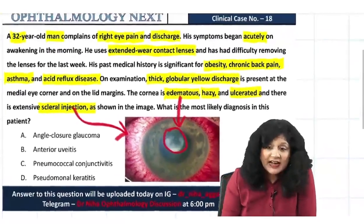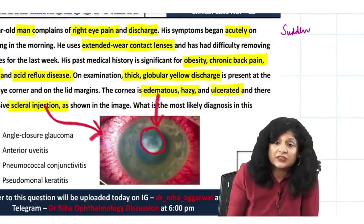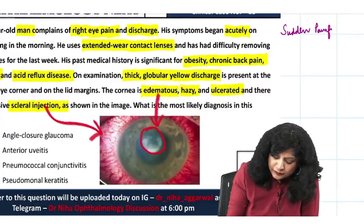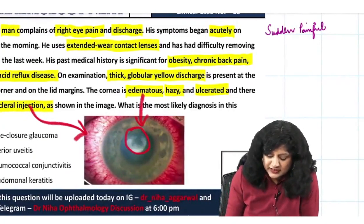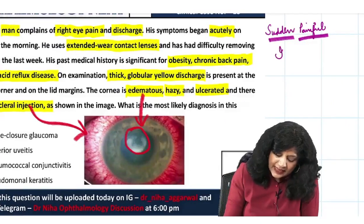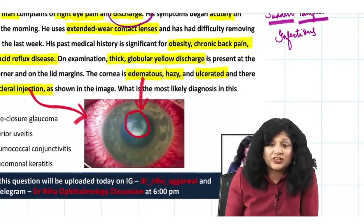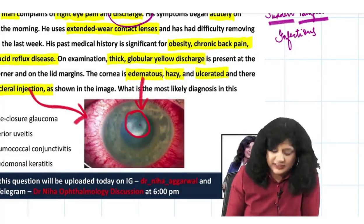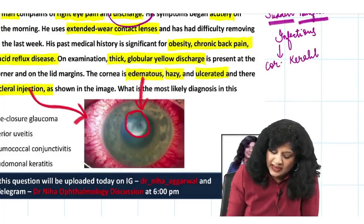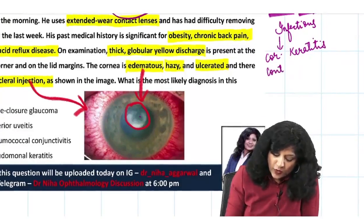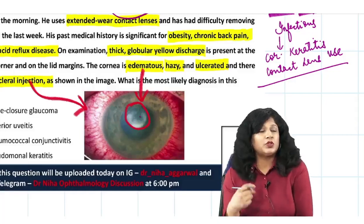Summarizing the findings: this is a sudden, acute, painful condition with discharge, indicating an infectious condition. This infectious condition is associated with a corneal ulcer — so we have infective corneal ulcer, i.e., infectious keratitis. They have also mentioned contact lens use. What should come to your mind?